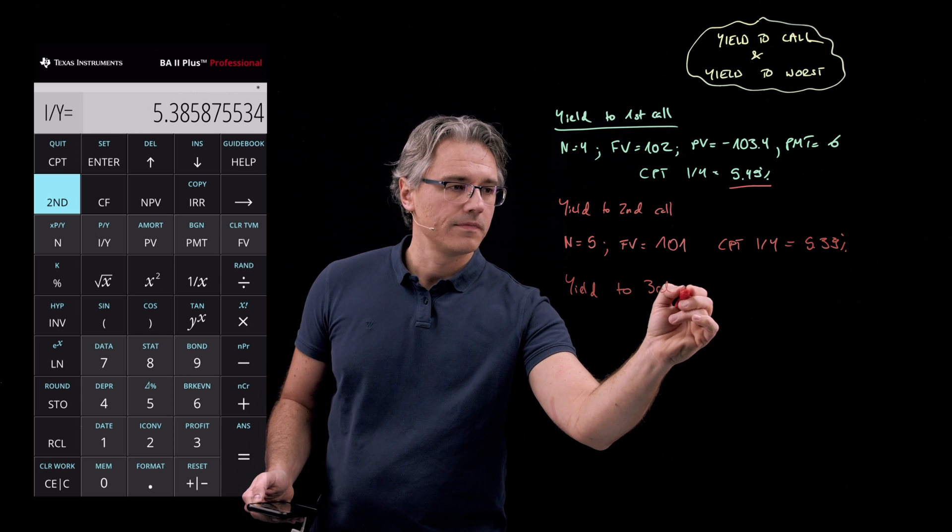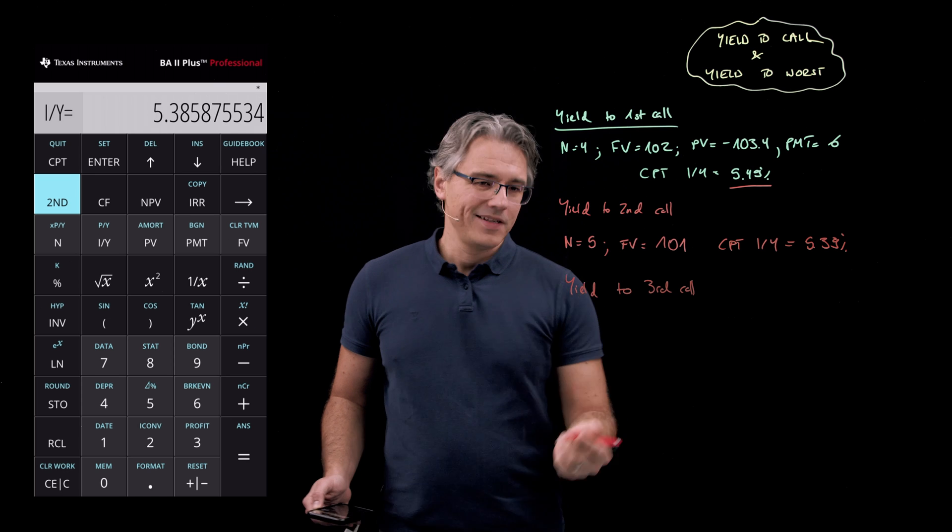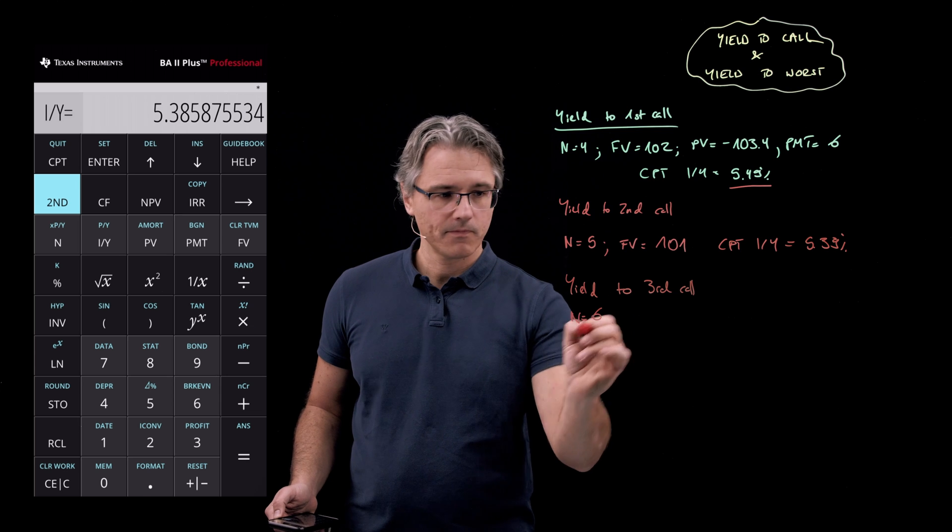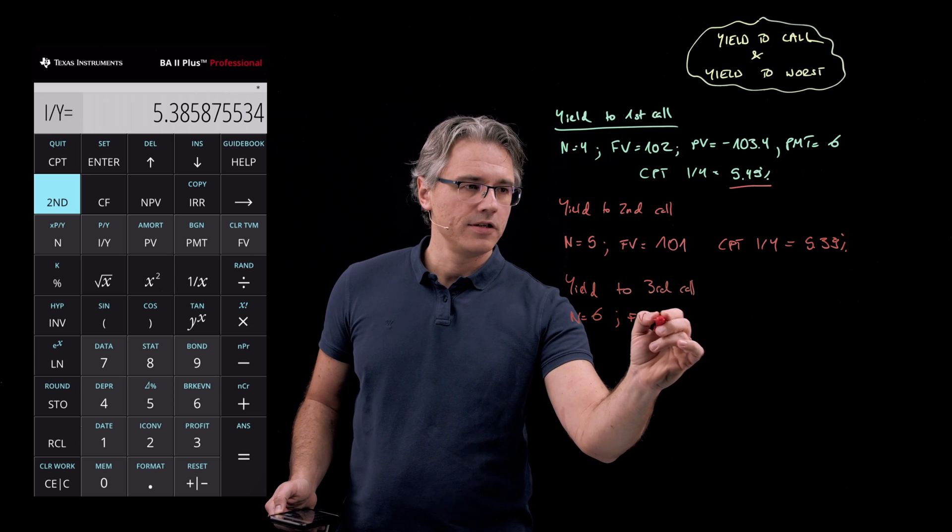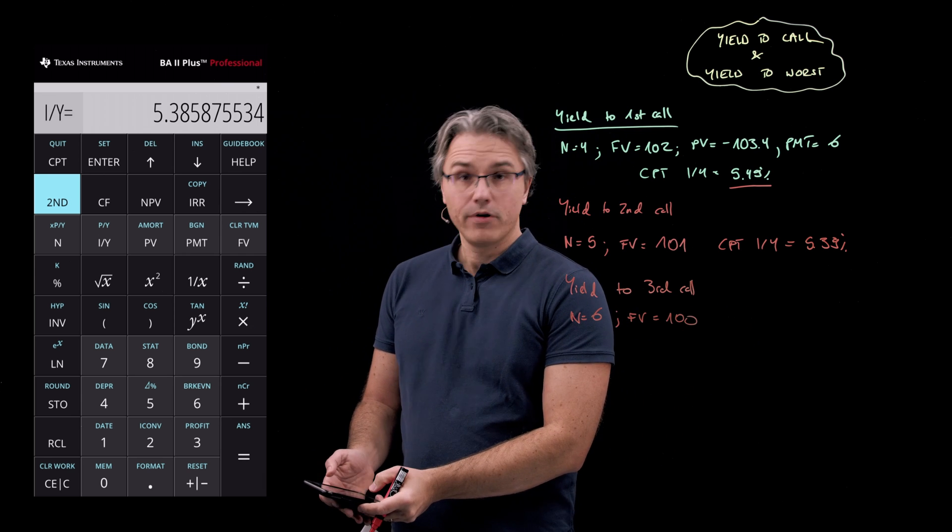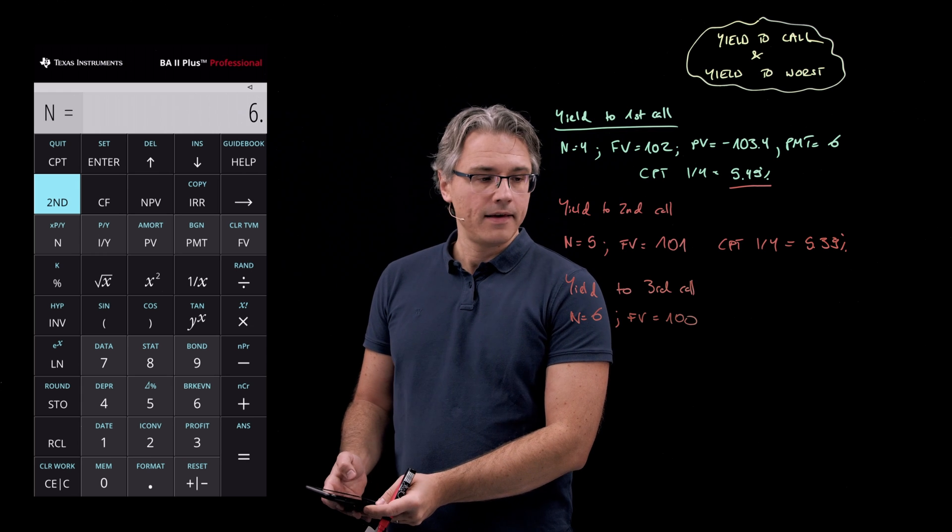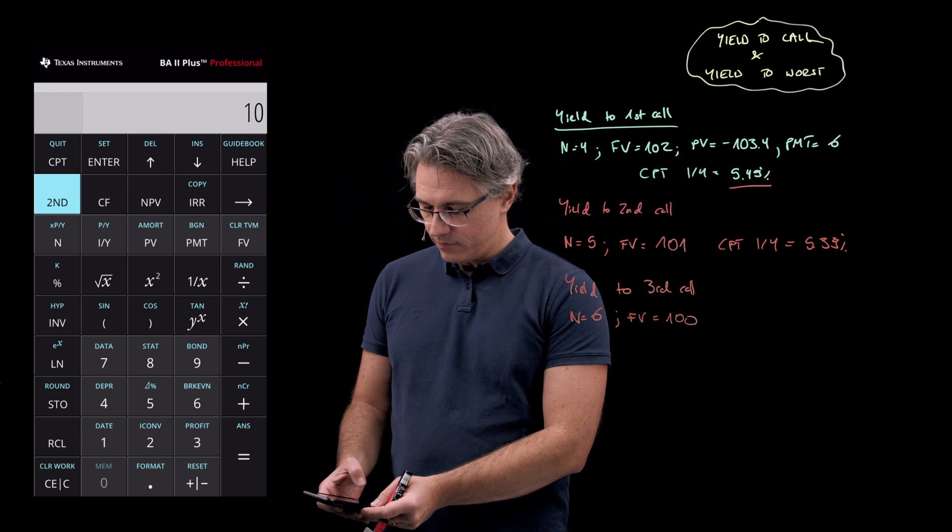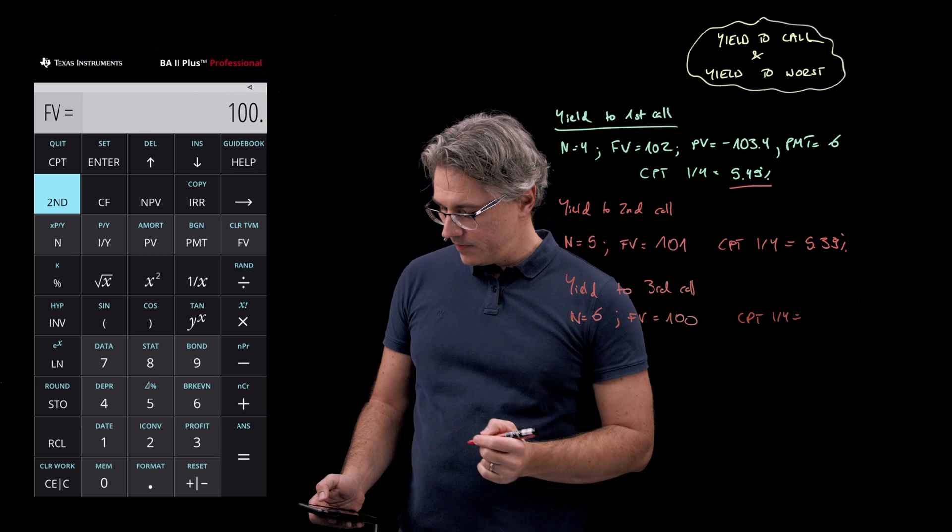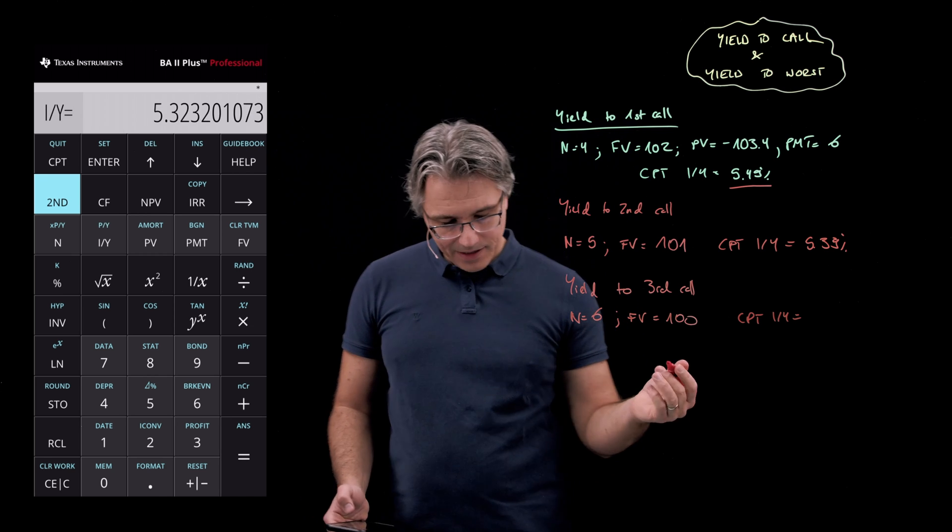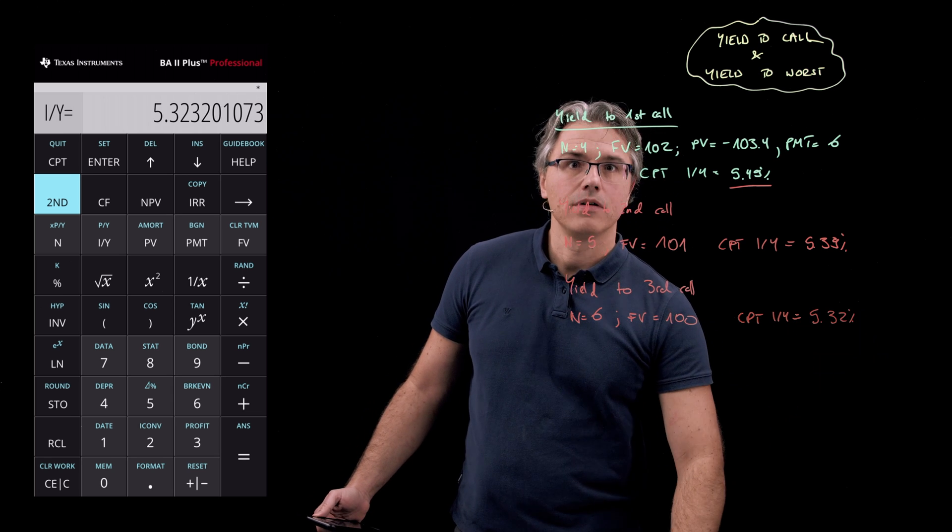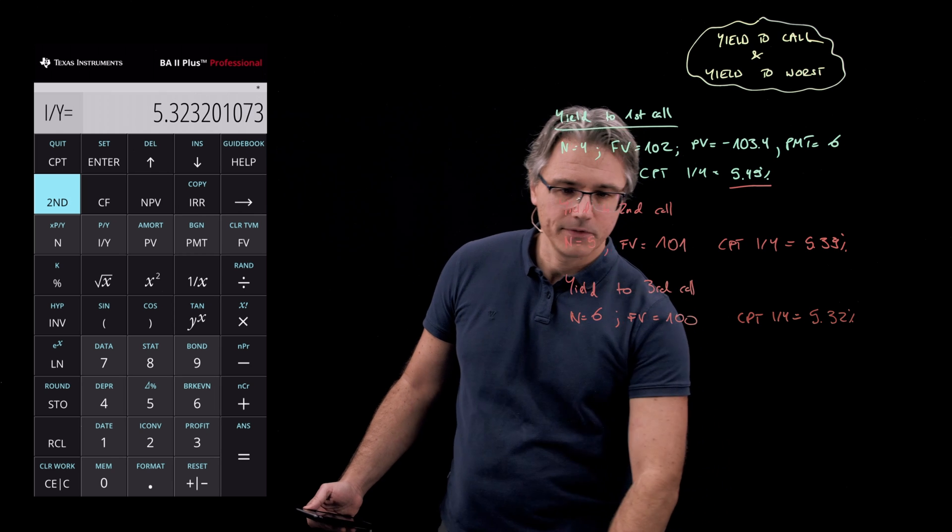Now what about the yield to third call? Because there's also that option. This time we're going to have N equal to 6 and an FV which is equal to 100. So just overwrite these inputs: 6 for N and 100 for FV, and see what we get when we recompute I over Y. It gives 5.32 percent.